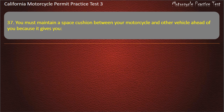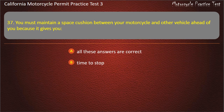Question 37. You must maintain a space cushion between your motorcycle and other vehicles ahead of you because it gives you: all these answers are correct, time to stop, time to react, or time to brake. Answer: All these answers are correct.